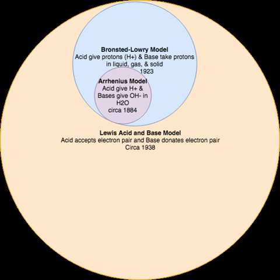For example, a Bronsted-Lowry model for the dissociation of hydrochloric acid in aqueous solution is: HCl + H2O → H3O+ + Cl−. The removal of H+ from HCl produces the chloride ion (Cl−), the conjugate base of the acid. The addition of H+ to H2O acting as a base forms the hydronium ion (H3O+), the conjugate acid of the base. Water is amphoteric — that is, it can act as both an acid and a base. The Bronsted-Lowry model explains this, showing the dissociation of water into low concentrations of hydronium and hydroxide ions: H2O + H2O → H3O+ + OH−.